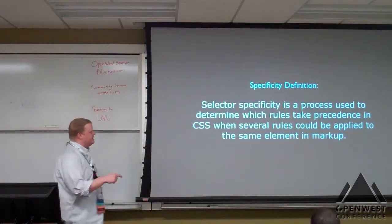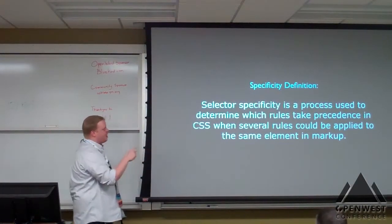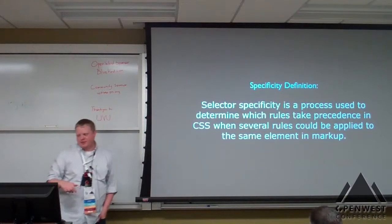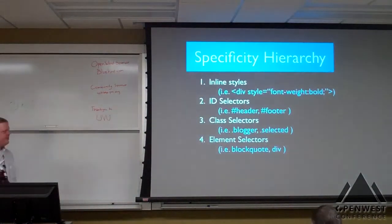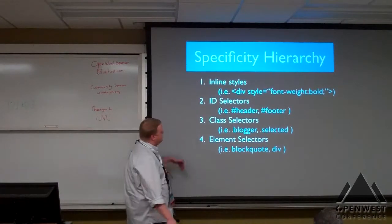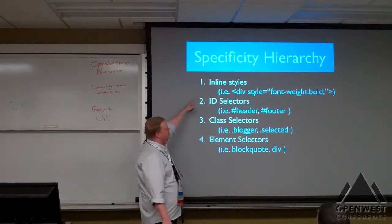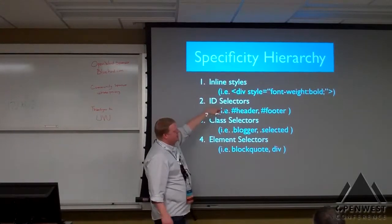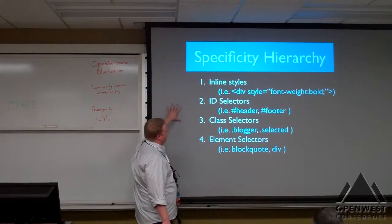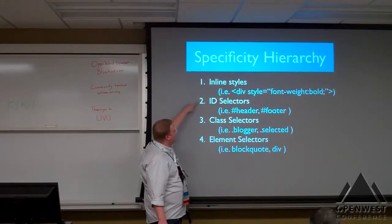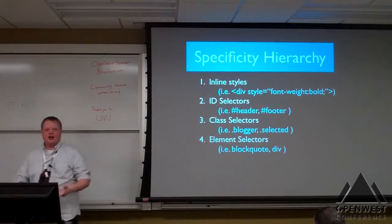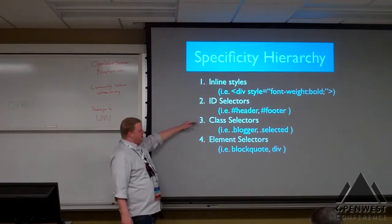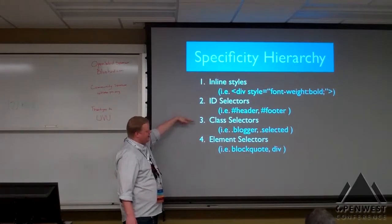CSS specificity — selector specificity is a process used to determine which rules take precedence in CSS when several rules could be applied to the same element in markup. There's a hierarchy. The highest priority are inline styles, which you try to avoid because they're very hard to change, but there are certain cases where you use them, or when you use jQuery to manually manipulate those styles. You have ID selectors, then class selectors, then element selectors — inline styles have the highest priority, then ID, then class, then element.